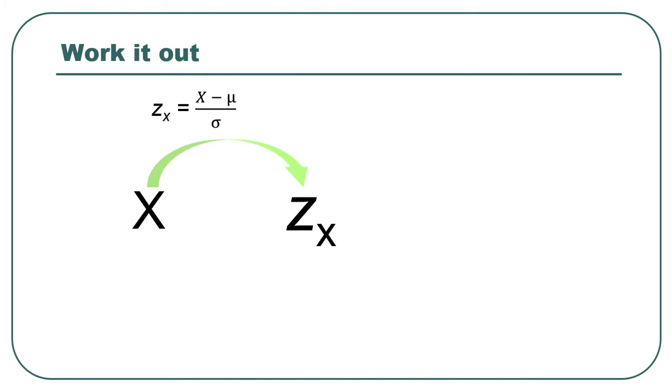All right, moving on. Here's what we're going to do. The first thing we need to do, because we have a situation where we have a raw score, 12, and we need to find the area in the normal distribution, where that raw score is a dividing point.